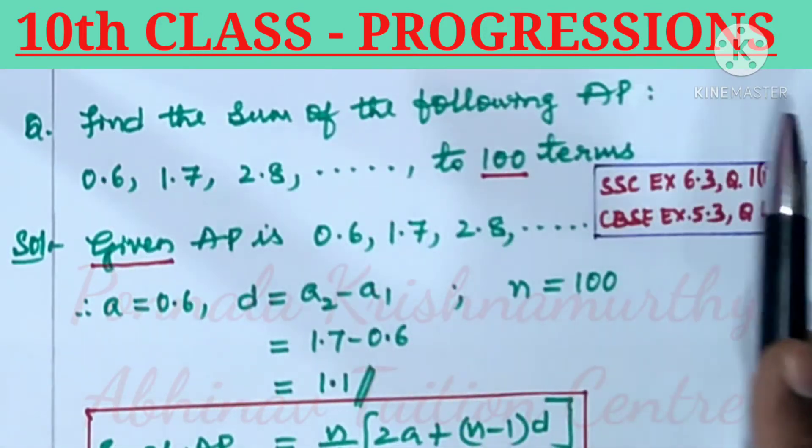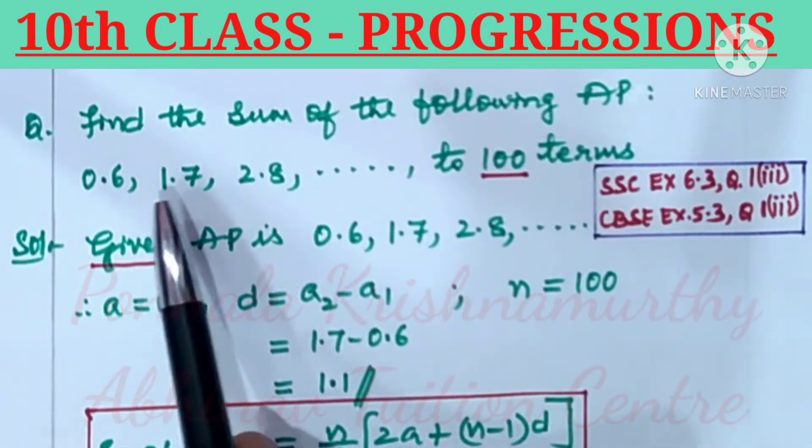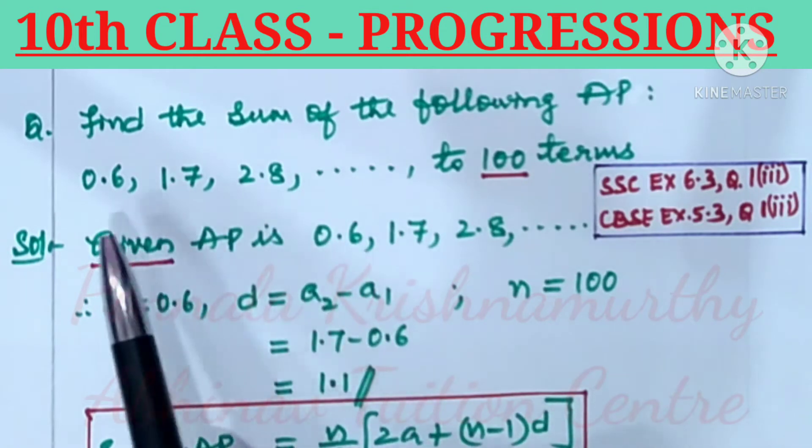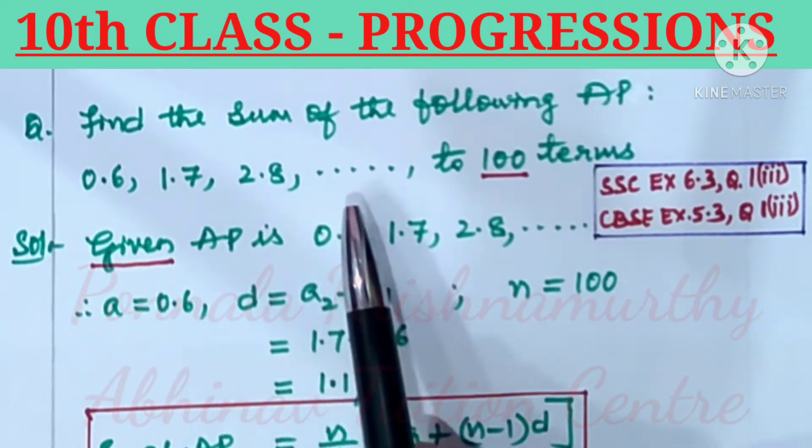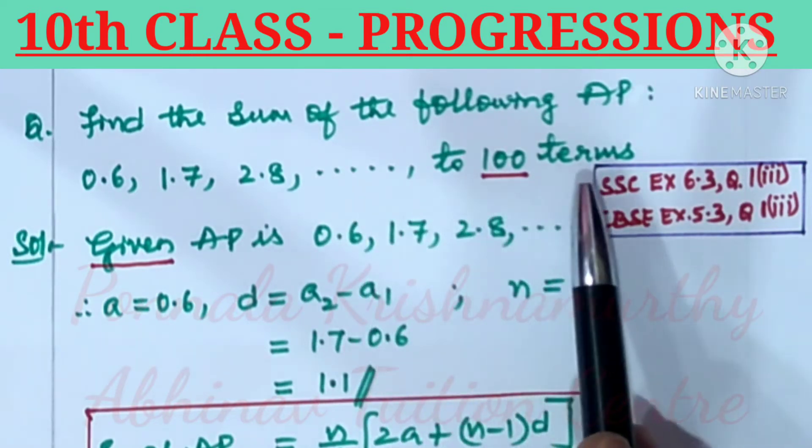Tenth class, Progressions. Find the sum of the following AP: 0.6, 1.7, 2.8, and so on to 100 terms.